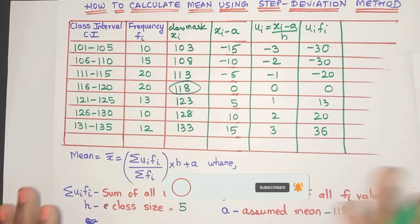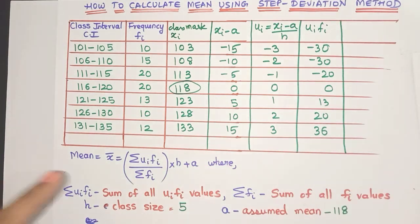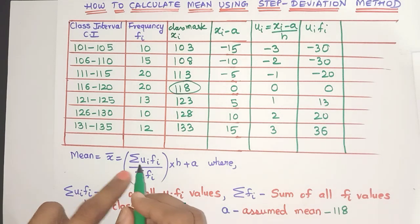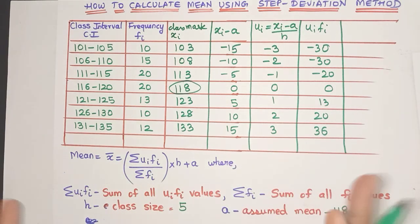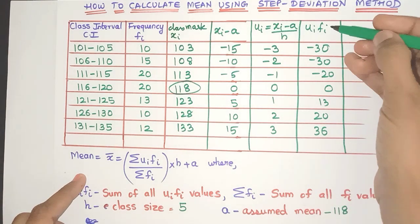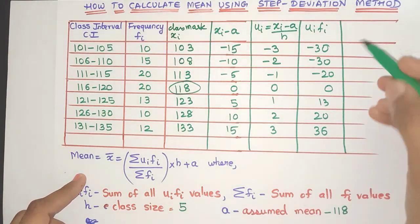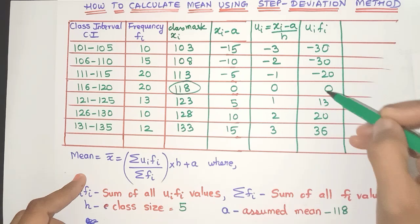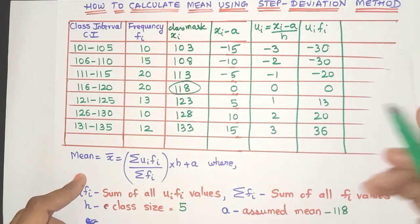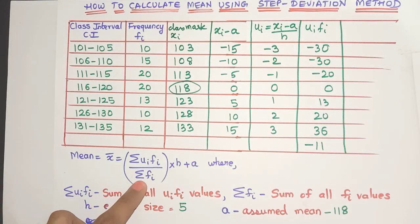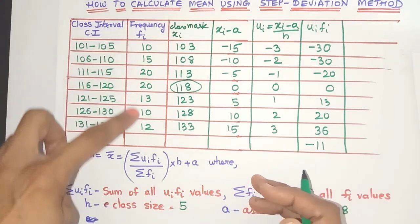And that's it, friends. All our columns are ready. Let's go back to the formula. It says here sigma ui fi. Now what is sigma? Yes, it's a Greek symbol which means adding. So I'm going to add all the ui fi values, friends. Very carefully, because there are negative signs also you need to add. And when I add, I'll get the answer is minus 11. Now then it says sigma fi, so again I need to add all the frequency values. When you add it, you'll get 100.